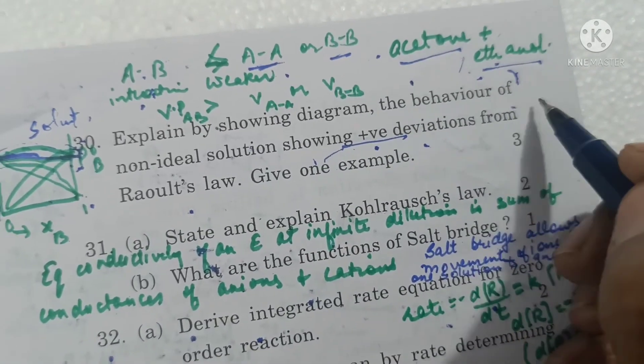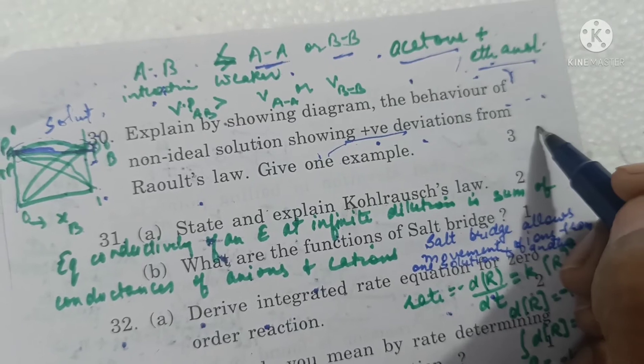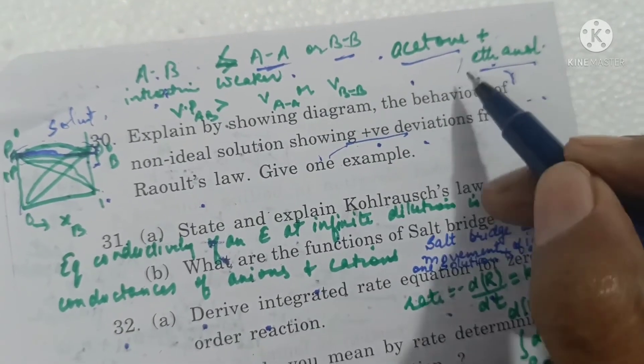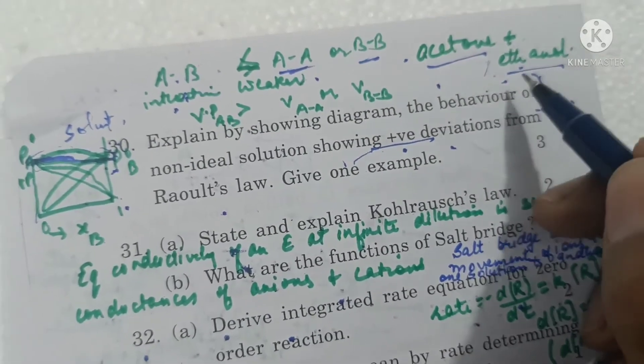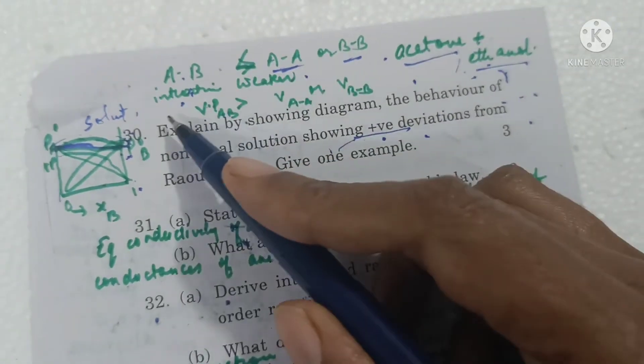For example, a combination of acetone and ethanol will be non-ideal solution showing positive deviation. In ethanol, there is hydrogen bonding which is difficult to break, but when acetone comes between ethanol molecules those hydrogen bonds are broken and interactions are weaker.